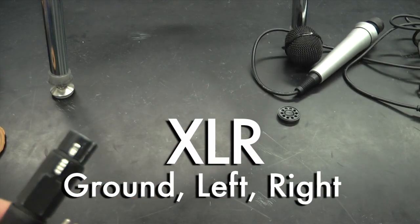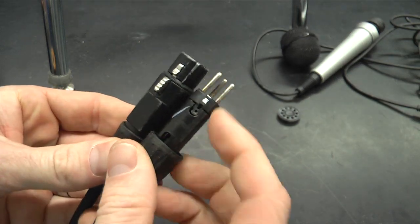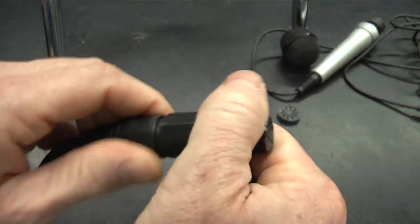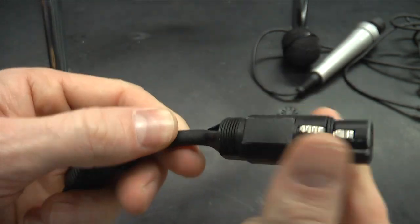So an XLR microphone will plug in and include the ground. And the XLR connection looks like this. And I've removed the, this unscrews so that you can get at the connection points here.